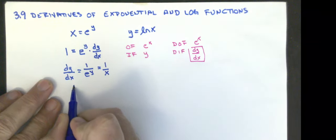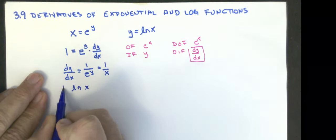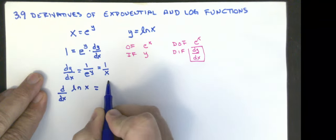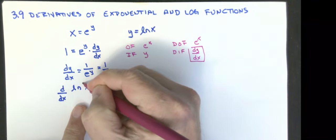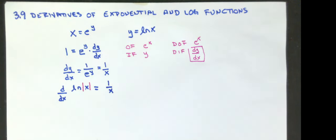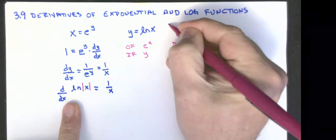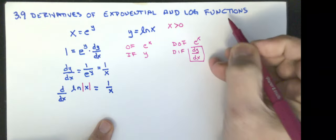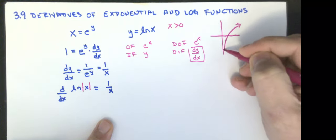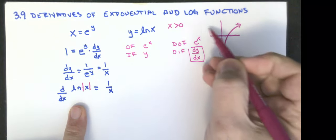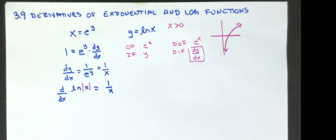So the derivative of the natural log of x is equal to one over x. We're going to say that the derivative of the natural log of the absolute value of x is equal to one over x. Remember, our natural logarithm function requires x to be greater than zero. By making it the absolute value, that lets me put negative numbers in — I still can't put zero in. So the derivative of the natural log of x is one over x.